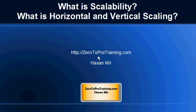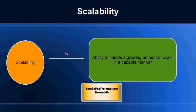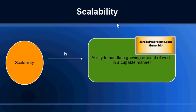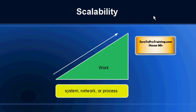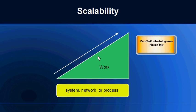Hello, in this session we will talk about what is scalability and what is horizontal and vertical scaling. This is Hassan Mir from zerotoProTraining.com. The term scalability is defined as the ability to handle a growing amount of work in a capable manner. So scalability is an ability — but ability for what? The ability for a system, network, or process to handle a growing amount of work.